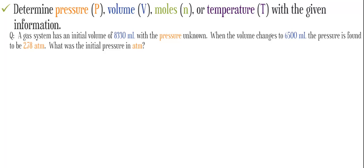A gas system has an initial volume of 8,330 mL with the pressure unknown. When the volume changes to 6,500 mL, the pressure is found to be 2.78 atmospheres. What was the initial pressure in atmospheres?